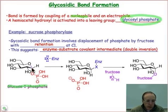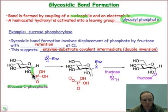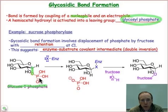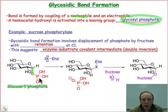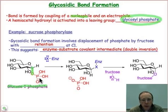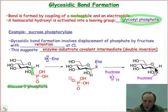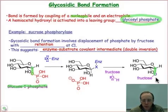Why phosphate? Because it's a good leaving group — that anomeric hydroxyl group has been transformed into a phosphate ester. On a few webcasts, we're going to actually be discussing more of the phosphate chemistry, the bioorganic phosphorus chemistry. Basically, this is a good leaving group, and it makes glucose the electrophilic partner for the glycosidic bond formed in the disaccharide sucrose.